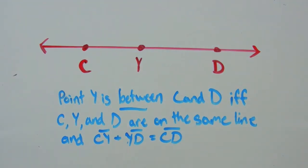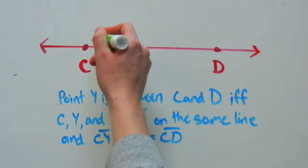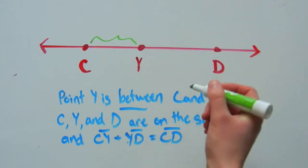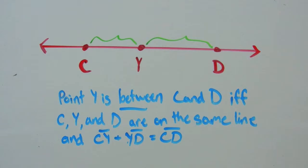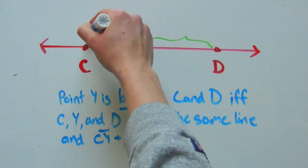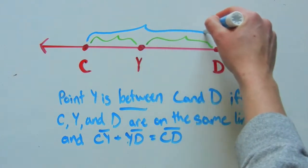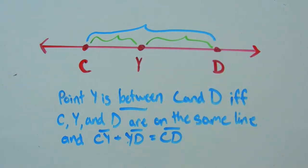So that's saying that this segment right here plus the segment right there from Y to D equals the entire length, which visually we can see that's true. But let's go ahead and measure that out. I'm going to use centimeters for this example.